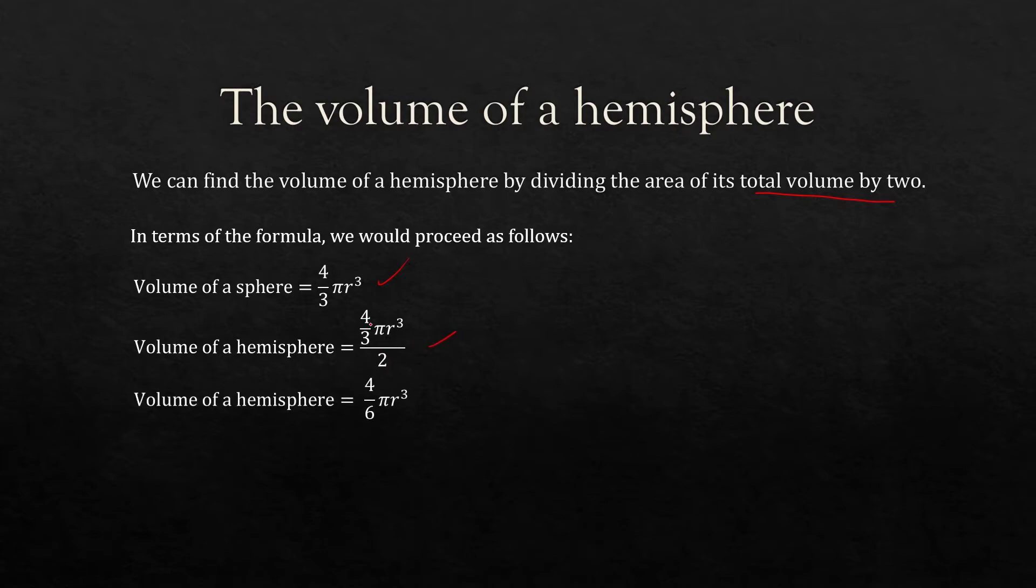And then when we simplify, 4/3 divided by 2 is the same as 4/6. A quick way to do that just multiply the 2 and 3, 2 times 3 is 6 here. And then we simplify that and we'll get 2/3 pi r cubed.